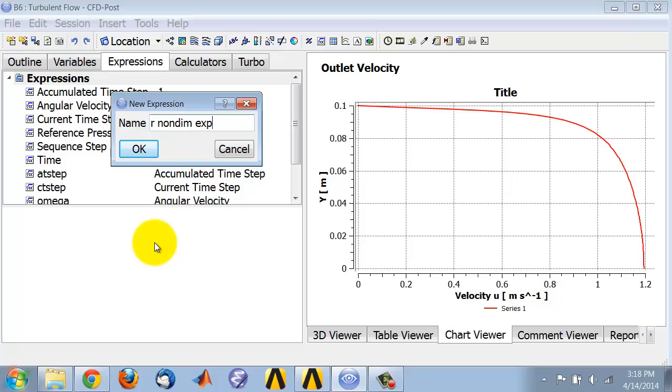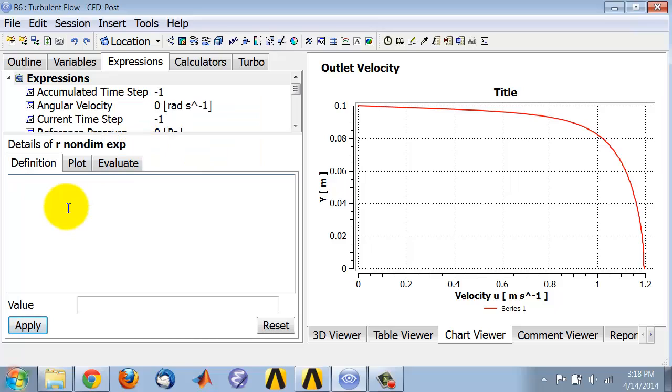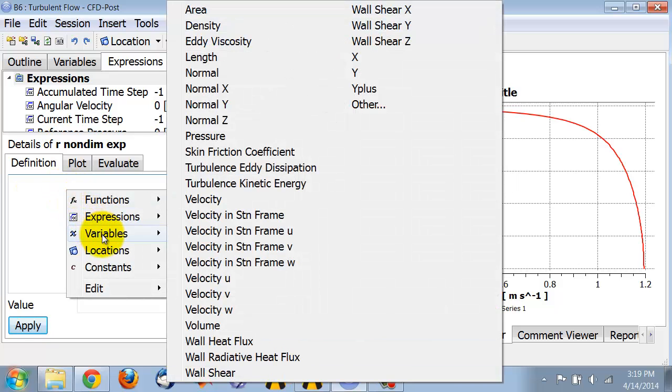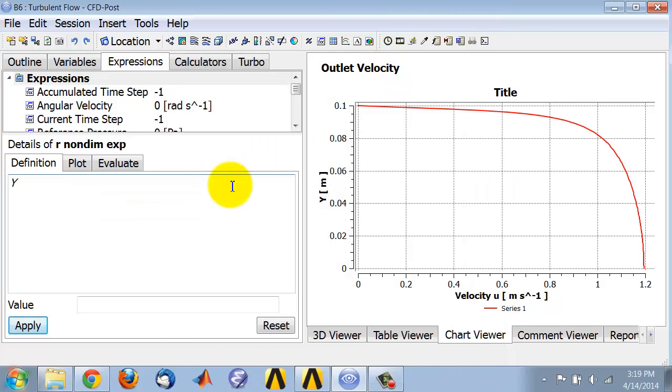I'll reserve the name r non dime for the variable that I create from this expression. I want first the distance along the radial direction, so I'll right click variables, and if I scroll down here I see y.